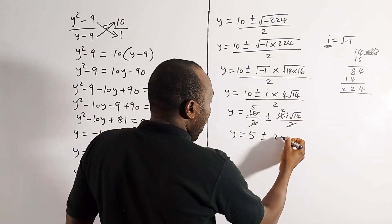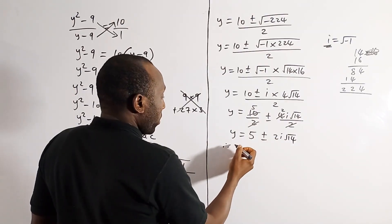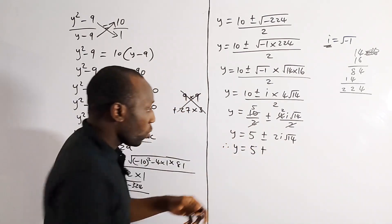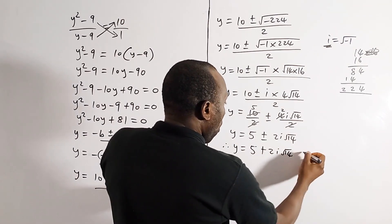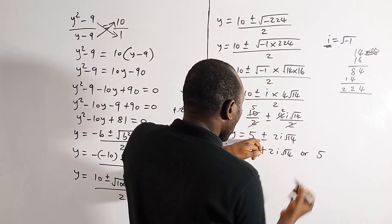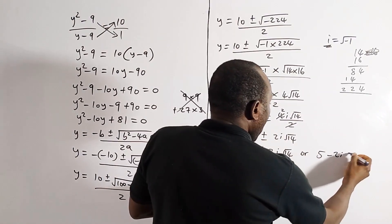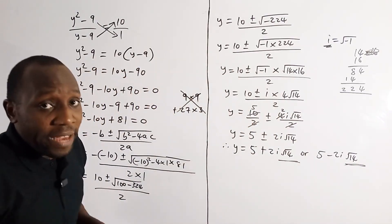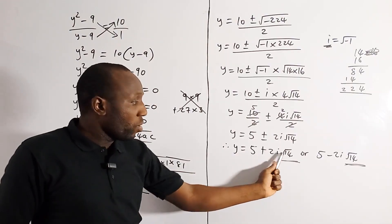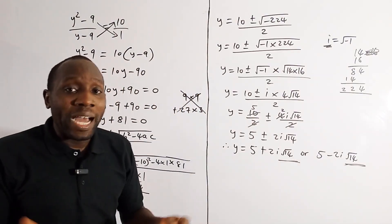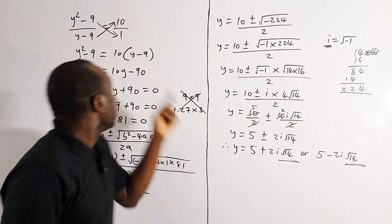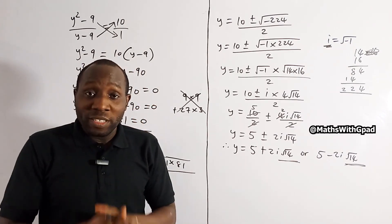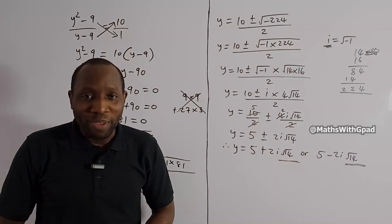Therefore the two values of y are: y equals 5 plus 2i root 14, or y equals 5 minus 2i root 14. These are complex numbers, so we have no real solutions — only complex solutions to this equation. I hope you found value from this video. Kindly subscribe to this channel for more content like this, share the video with your friends and family, and I'll see you in the next one. Bye for now.